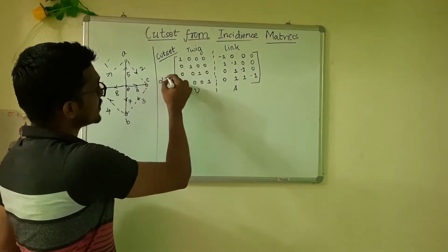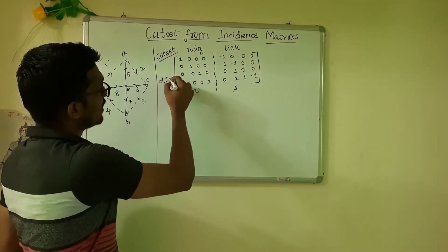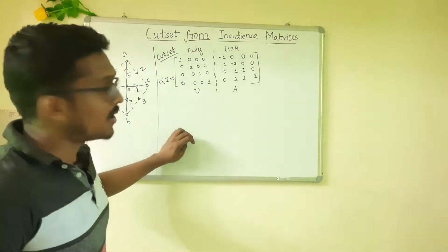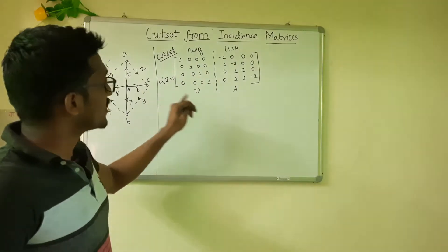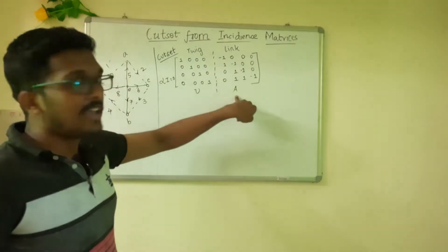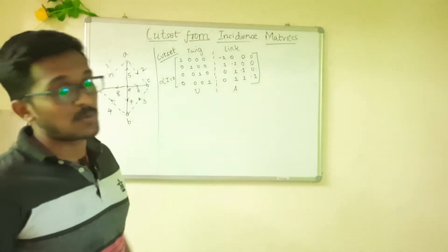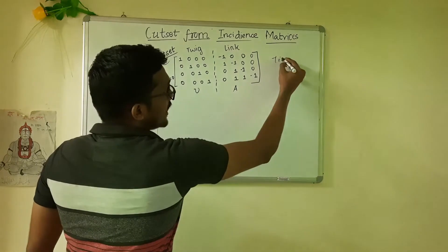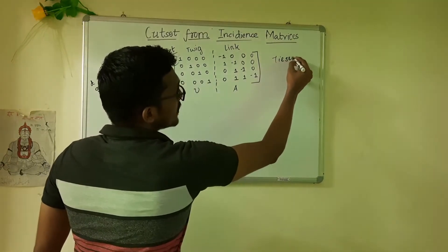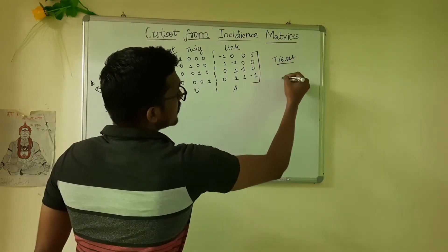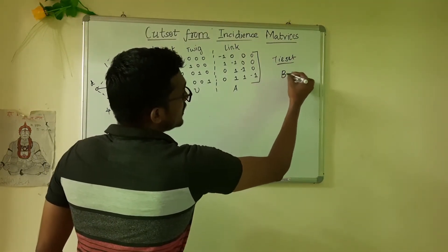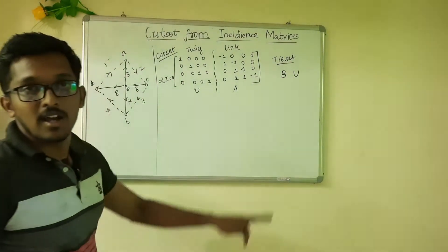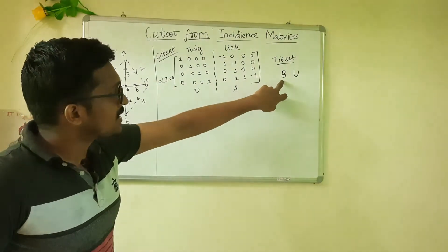Now, we know that in the general form, alpha_i is equal to zero. That is why the notation of alpha is equal to zero. This is the tie-set matrix. Here is U to the B.